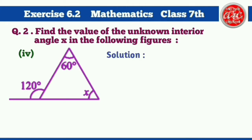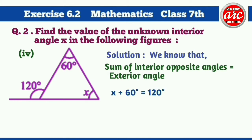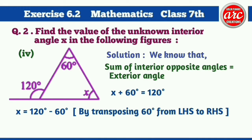Part 4 solution: We know that the sum of interior opposite angles is equal to the exterior angle. X plus 60 degrees is equal to 120 degrees, or X is equal to 120 degrees minus 60 degrees by transposing 60 degrees from the left-hand side to the right-hand side. So X is equal to 60 degrees. Hence, angle X is equal to 60 degrees.